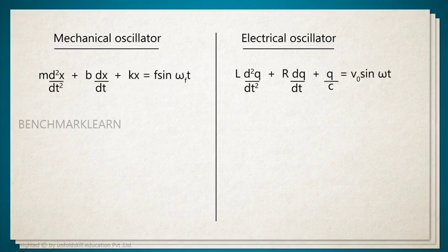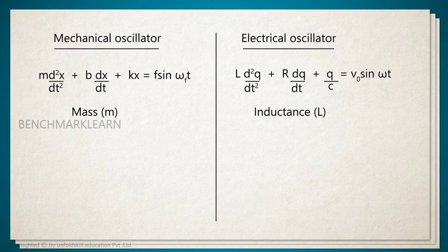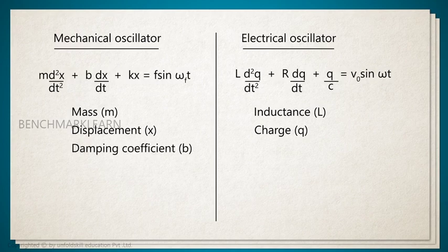Here, in the case of a mechanical oscillator, in the place of mass, we have in the electrical oscillator the inductance. At the place of displacement x for the mechanical oscillator, we have the charge q for the electrical oscillator. In the case of damping coefficient b for the mechanical oscillator, we have the resistance R for the electrical oscillator.